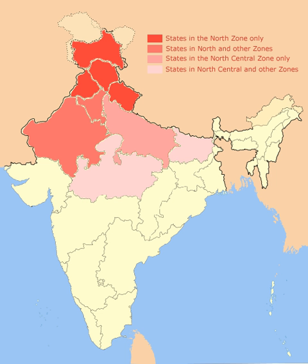Vikramshila Gangetic Dolphin Sanctuary, located in the state of Bihar, is the only protected zone for the endangered Ganges and Indus River Dolphin. Bharatpur Bird Sanctuary is one of the finest bird parks in the world, offering protection to faunal species as well. Nesting indigenous water birds as well as migratory water birds and waterside birds, this sanctuary is also inhabited by Sambar, Chital, Nilgai and Boar.